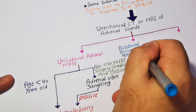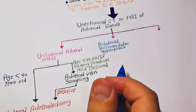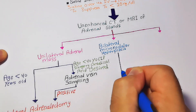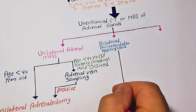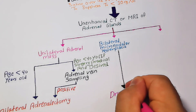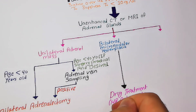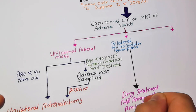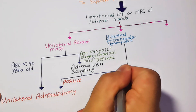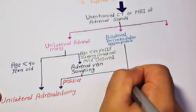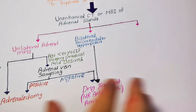If CT scan or MRI shows bilateral micronodular hyperplasia, we follow medical drug treatment. The drugs include two groups: mineralocorticoid receptor antagonists, or amiloride. If the patient has a unilateral adrenal gland finding but is older than 40 years and adrenal vein sampling is negative, we also follow medical treatment.